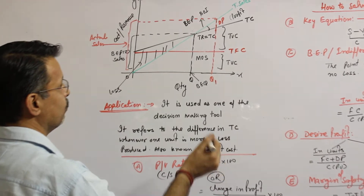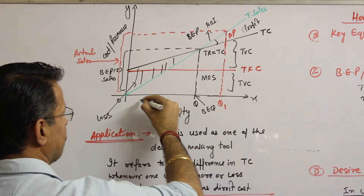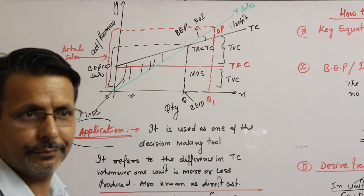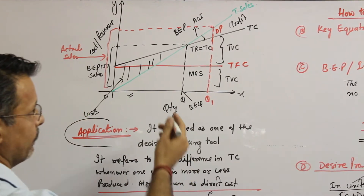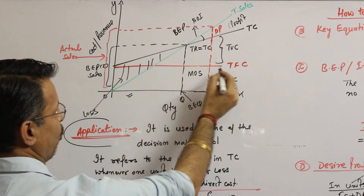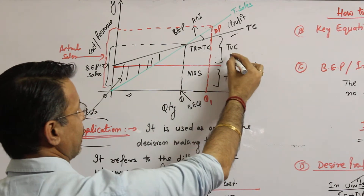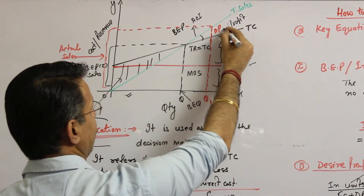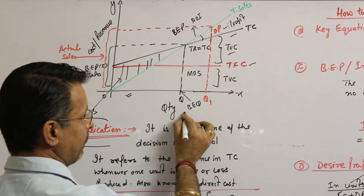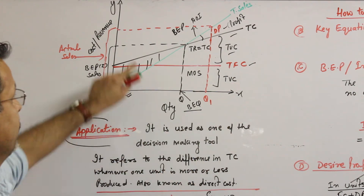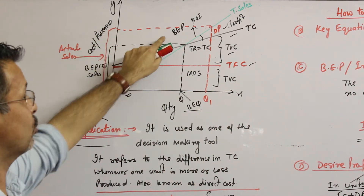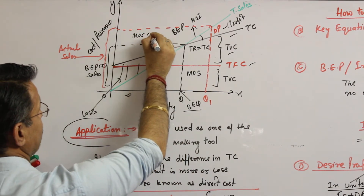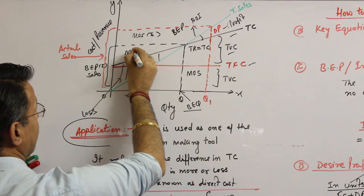In the last lecture we discussed all the items which were mathematically related to our applications, including total fixed cost, total cost, total variable cost, if desired profit is given, break-even quantity, break-even sales, actual sales, and margin of safety units.